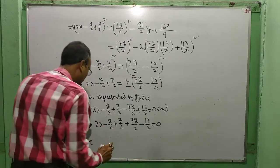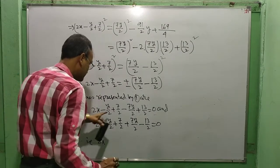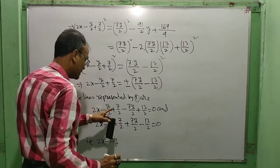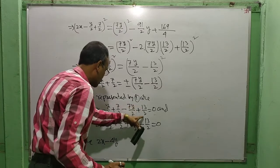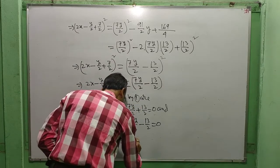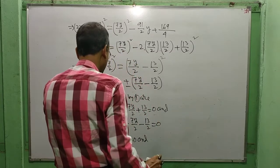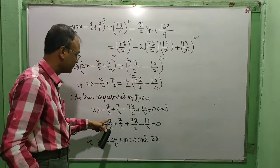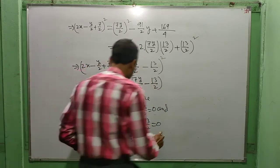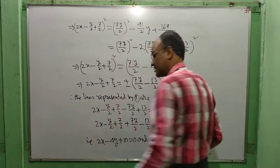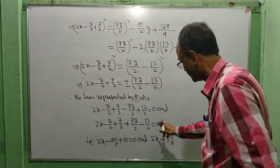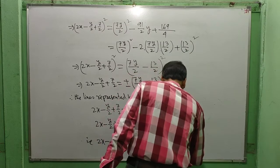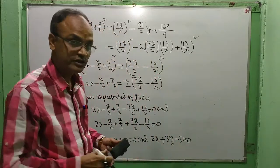Simplifying the first: 2x − 8y/2, which means −4y, plus 20/2 means +10, equal to 0. And the second gives 2x + 6y/2, that is +3y, and 13 − 6 = 7, minus 6/2 means −3, equal to 0.